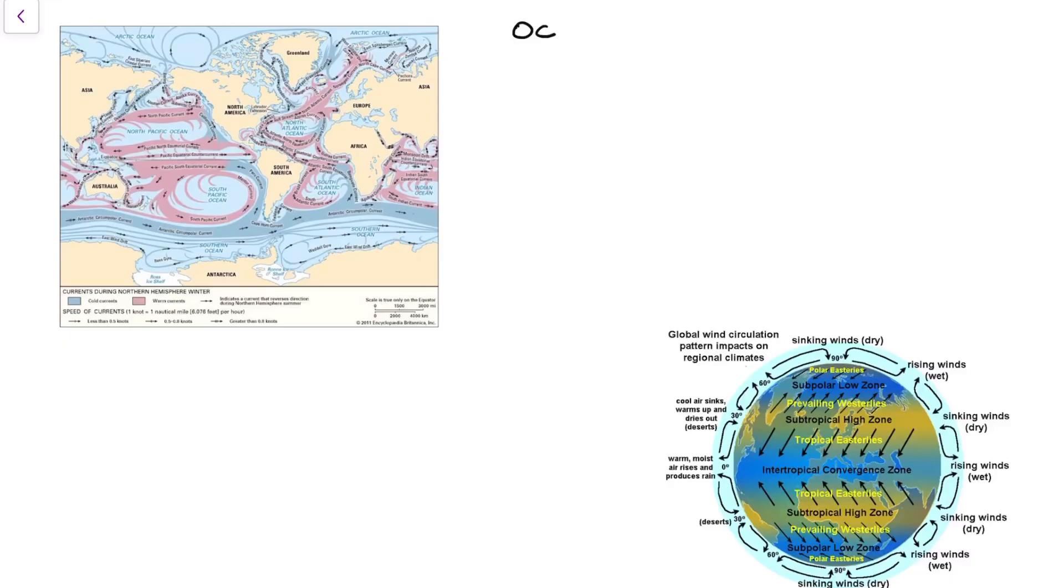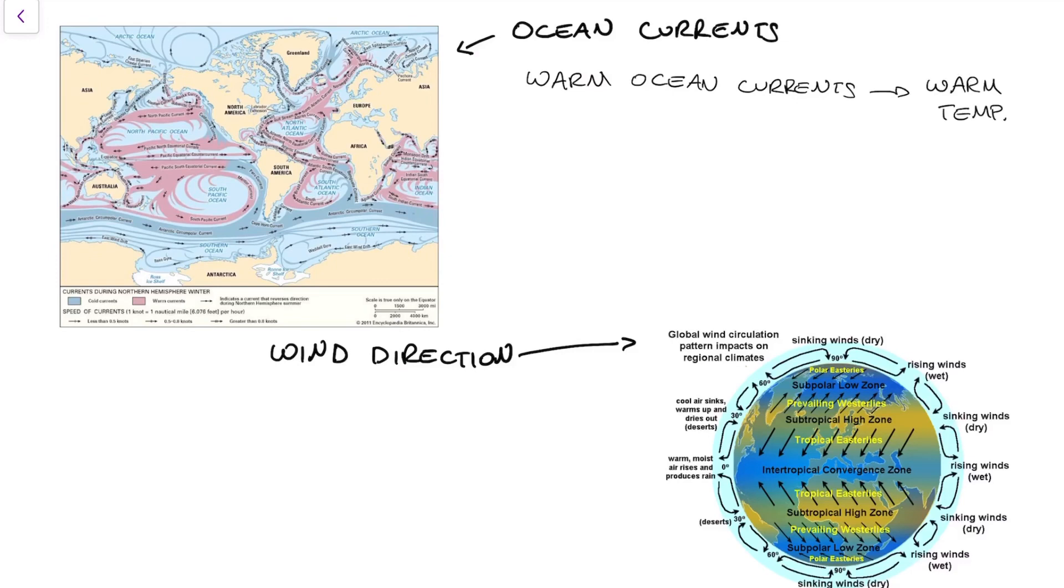The next factor that affects temperature is that of ocean currents and also wind direction. So the ocean currents affect temperature because there are different types of ocean currents. We have cold ocean currents and also warm ocean currents. So basically, any area where we have warm oceans, we are going to have warmer and wetter environments, and any areas that we have cold ocean currents, we're going to have cooler and also drier environments.